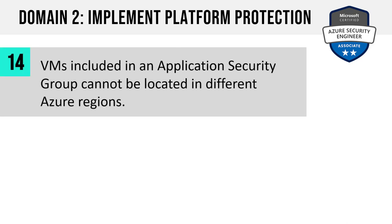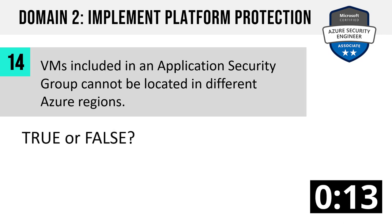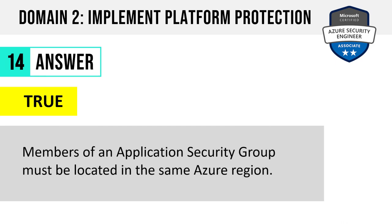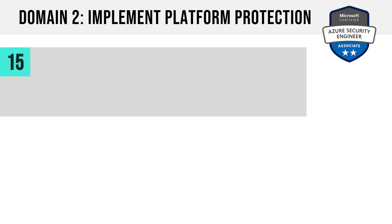Number 14. VMs included in an application security group cannot be located in different Azure regions. True or false? The answer is true. Members of an application security group must be located within the same Azure region. Candidates are typically more familiar with network security groups and less familiar with application security groups — make sure you get your arms around both of these before exam day.